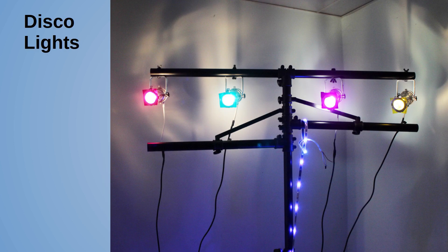Now let's look at a practical example of switching a very large load — in this case LED disco lights. These are PAR 16 theater lights; note that these are low-voltage type. Do not use this circuit with lights that connect directly to the mains electricity supply. Also, this is designed for LED bulbs only — halogen bulbs can pull a lot more current. With LED bulbs using much less power, it just makes sense to use LED bulbs anyway.